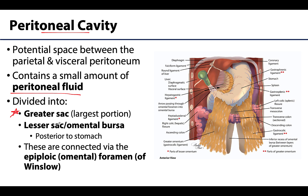There's also a lesser sac, often referred to as the omental bursa, which is located posterior to the stomach and the lesser omentum — so it's located behind these structures but anterior to the pancreas. The greater and lesser sac can communicate via the epiploic foramen, also known as the omental foramen or the foramen of Winslow. There are many different names associated with that connection between the greater and lesser sac.